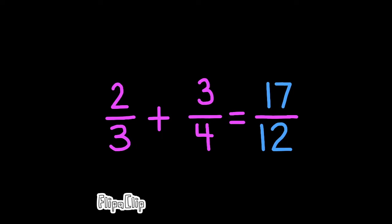You may have noticed that this is an improper fraction. You could leave it as an improper fraction, or you can turn it into a mixed number. Seventeen divided by twelve equals one and five-twelfths, because twelve goes into seventeen one time with five left over twelve.